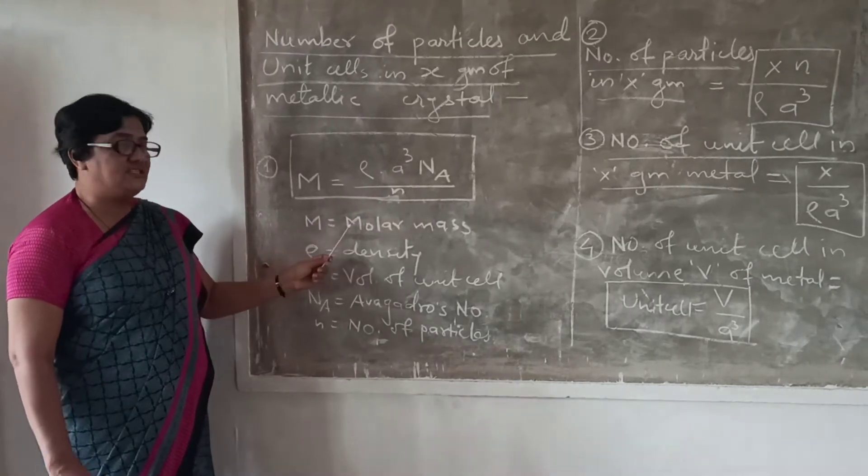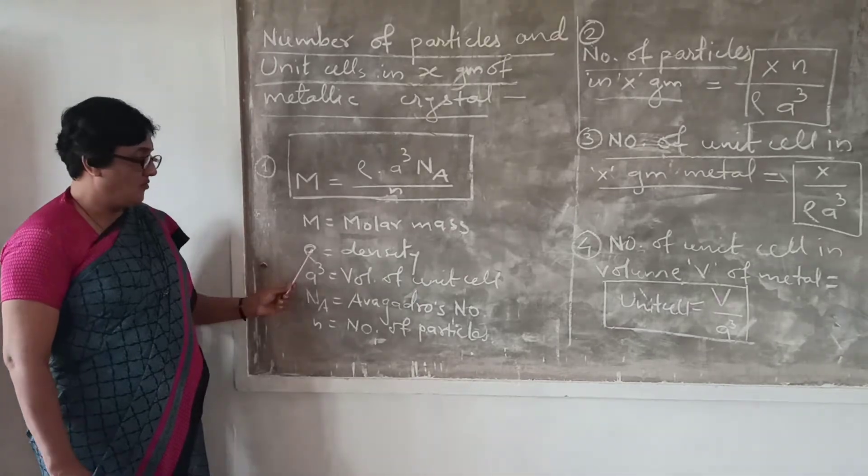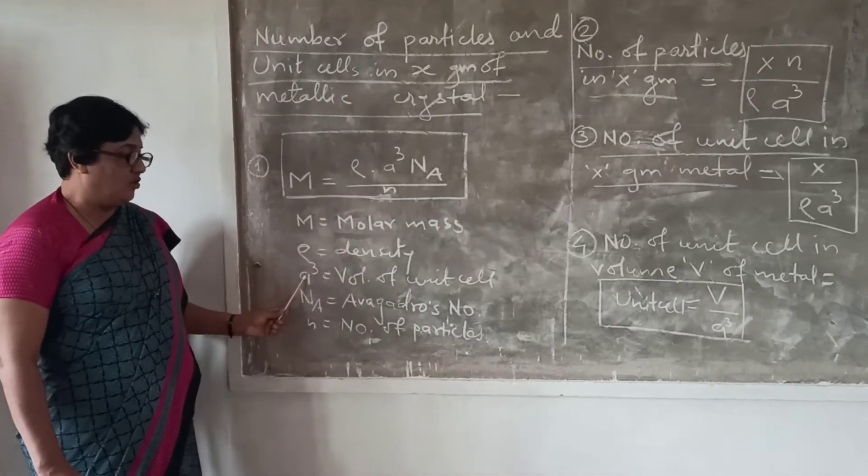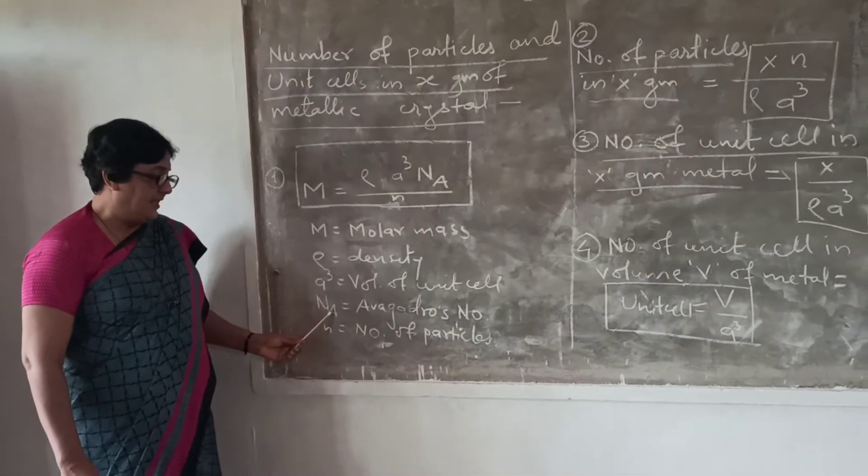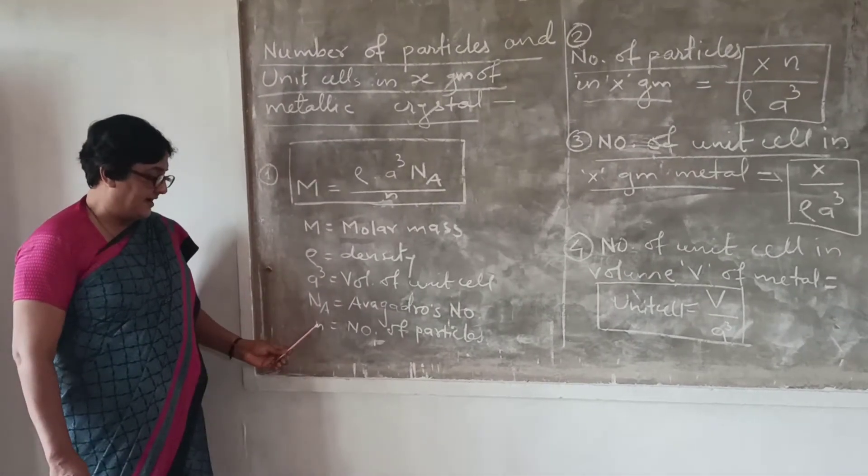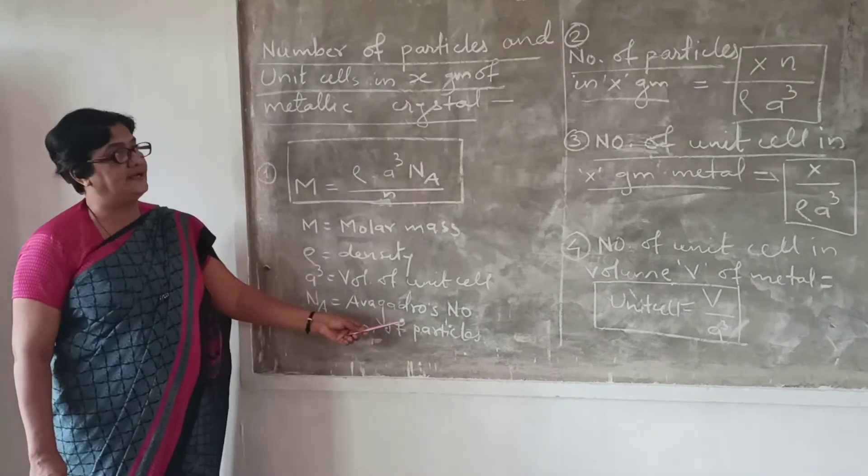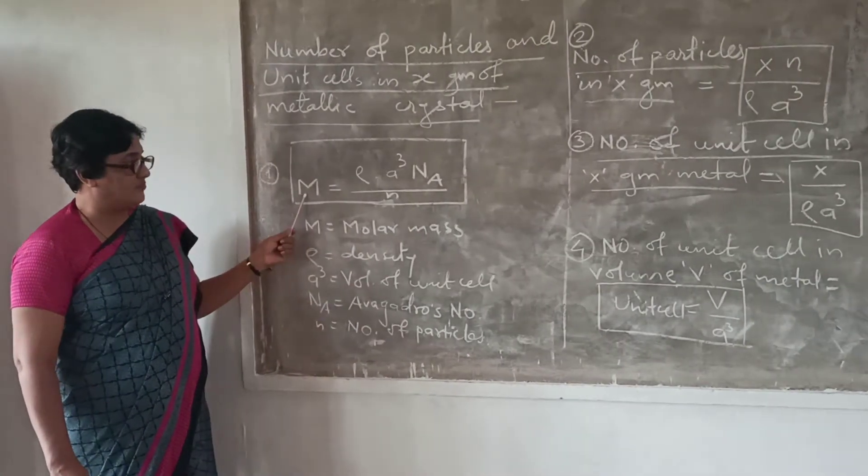Capital N means molar mass. Rho is density, A cube is volume of the unit cell which can be calculated, NA is Avogadro number, and small n means number of particles. This is the first formula.